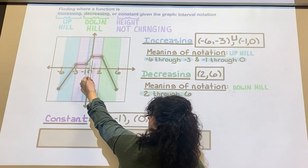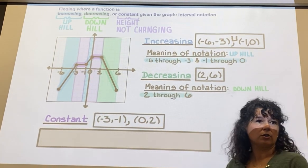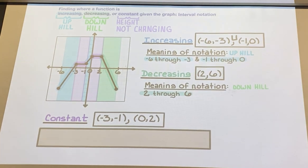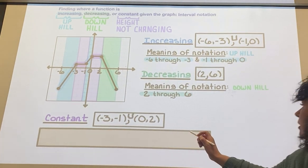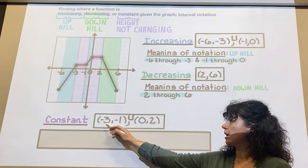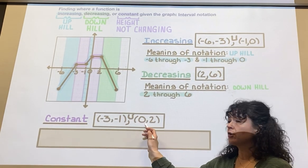But in this case here, my constant - we're going straight across from negative 3 through negative 1, and then straight across from 0 through 2. If I have the option instead of using a comma, I'm going to use U for union and say negative 3 through negative 1 union 0 through 2.